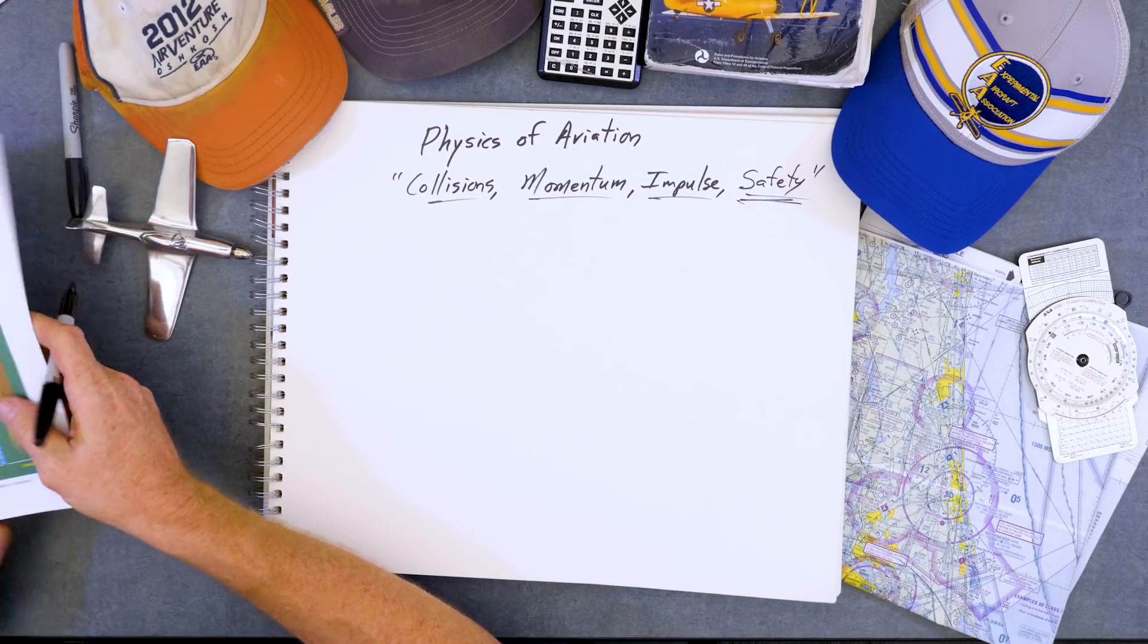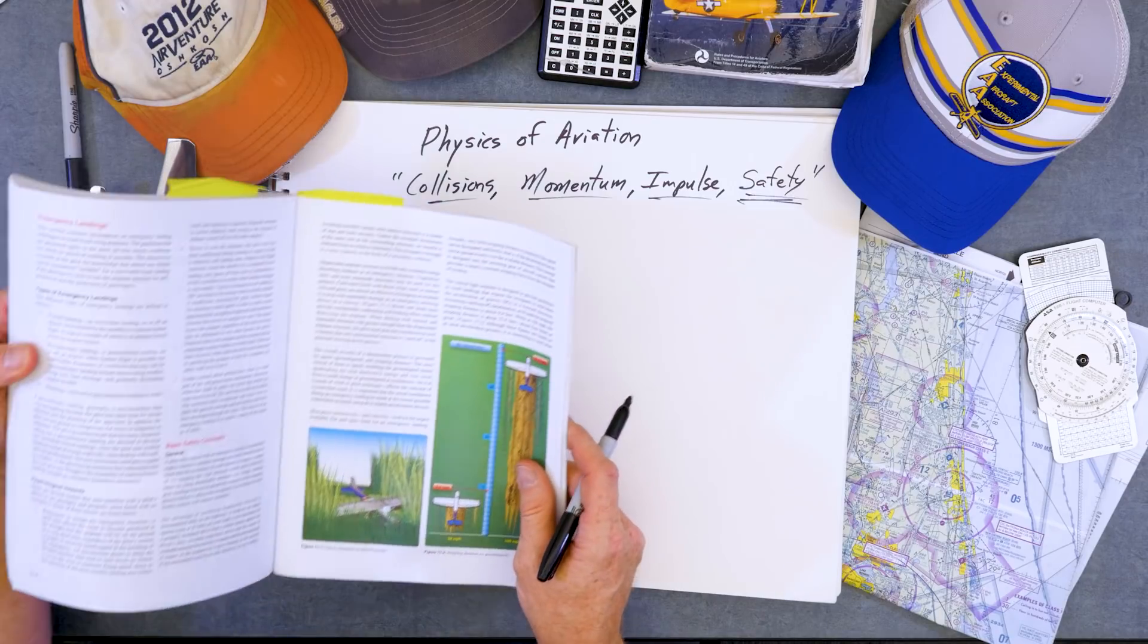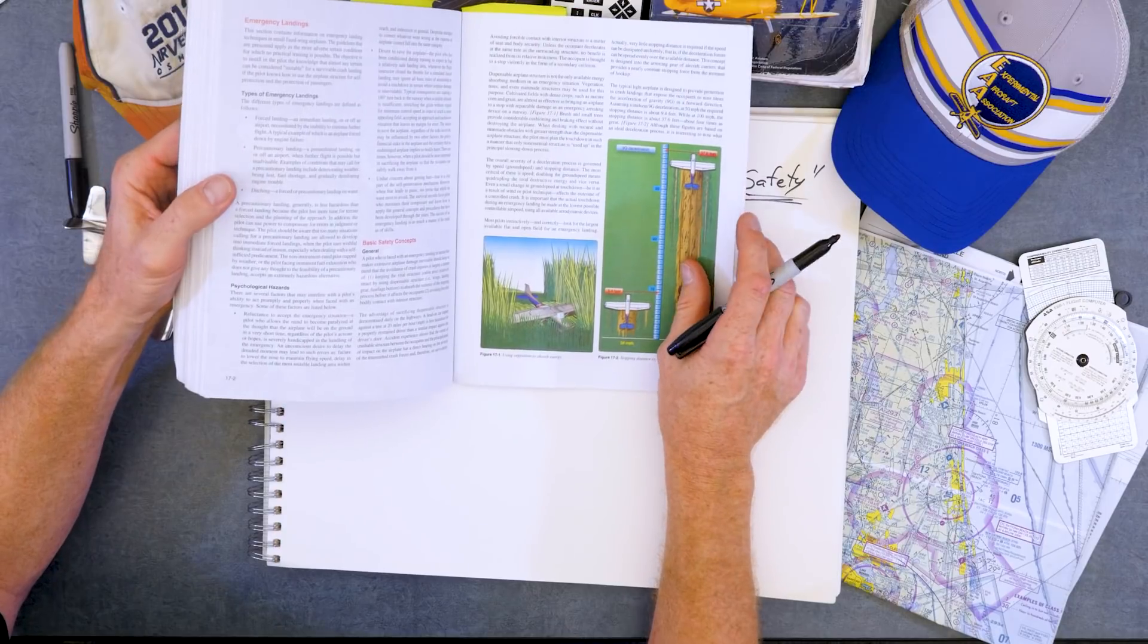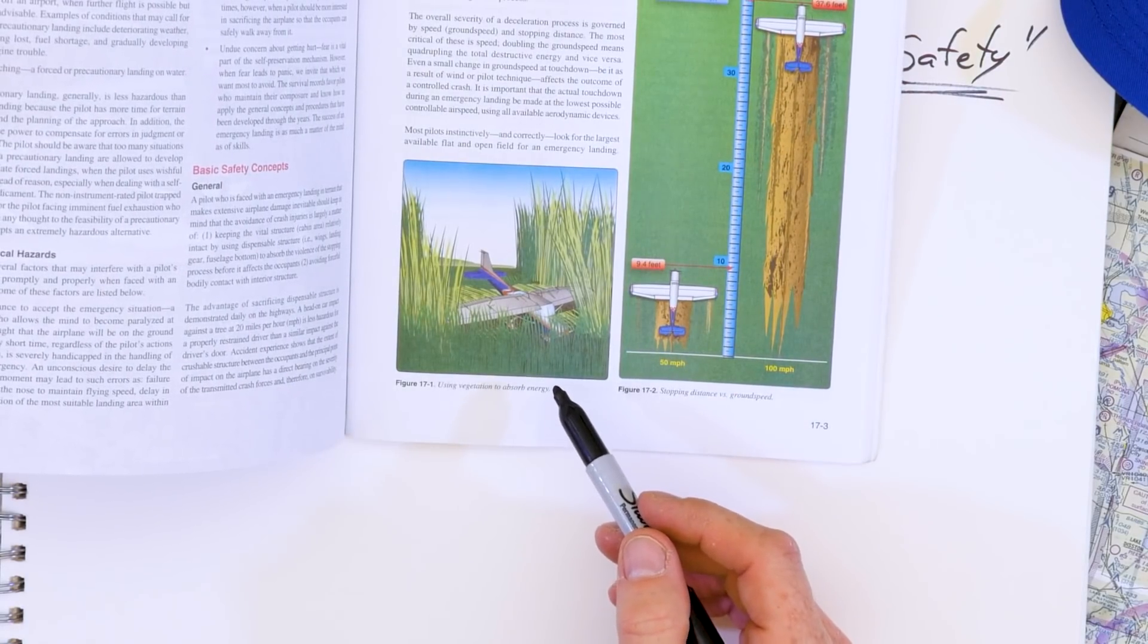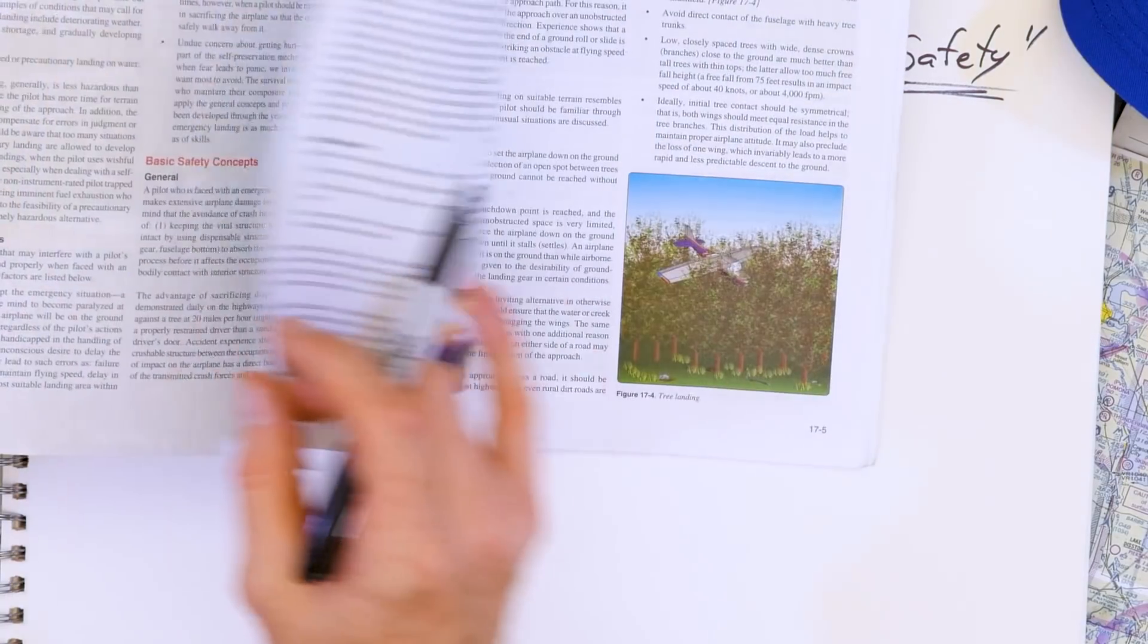So a quick reference to the airplane flying handbook. Hopefully everyone has read Chapter 17 twice, Future of Flight Instructors and Pilots. One thing they talk about here is looking at what's at the end of the field you choose. Do you have a wheat field or a corn field or do you have barns and oak trees?